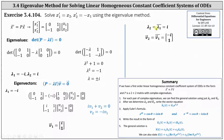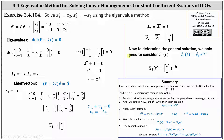The next step is to write x one of t equals V one times e to the power of lambda sub one times t. In our case this gives x one of t equals the eigenvector [i, 1] times e to the power of negative i times t. Now we apply Euler's formula to e to the power of negative i t.